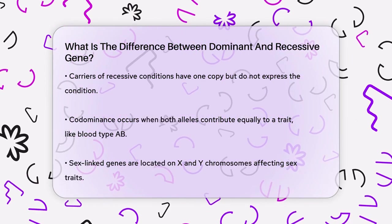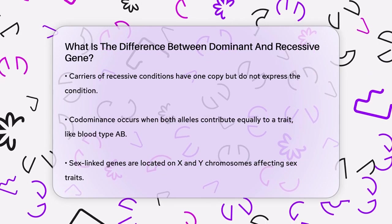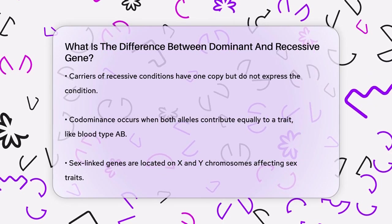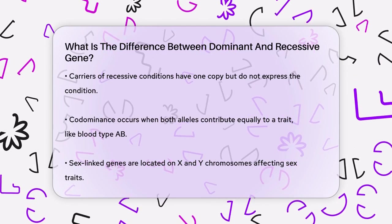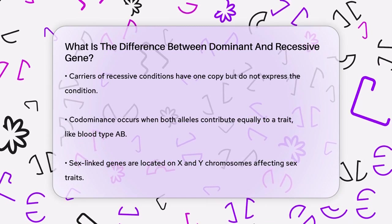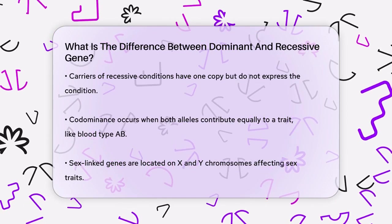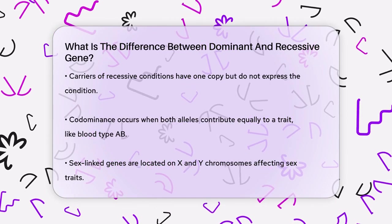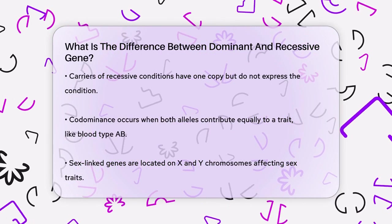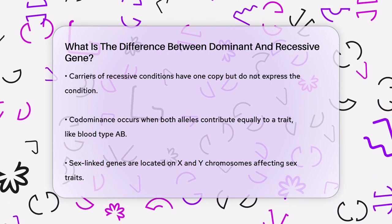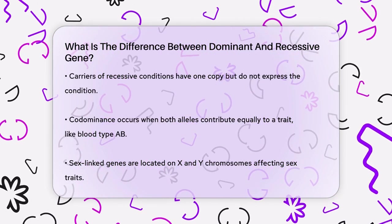There's also a third scenario called codominance, where neither allele is completely dominant or recessive. In this case, both alleles contribute equally to the trait. For instance, the blood type AB is a result of codominance between the A and B alleles.